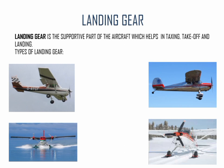This picture shows the types of landing gears. First is wheel type landing gear, then float type landing gear which helps the aircraft to land on water, skis type landing gear which helps the aircraft to land on snow, and the aircraft with the tail wheel is called conventional type landing gear. The aircraft with three wheels is also called tricycle type landing gear.